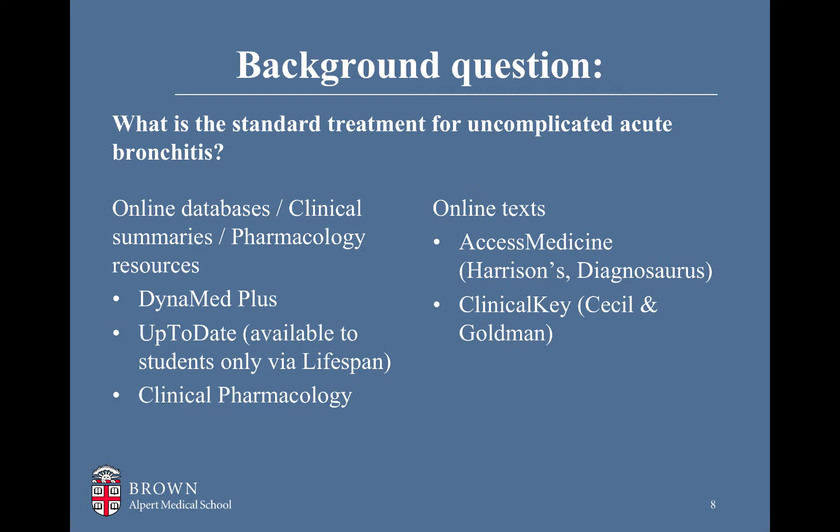You might also start with some online textbooks such as Harrison's, Cecil and Goldman, or Diagnosaurus if you want information about how to diagnose something. Access Medicine is a great resource for Harrison's, Diagnosaurus, and many other textbooks. Clinical Key is another collection of textbooks with the addition of some other resources — it has about a thousand textbooks, including Cecil's, Ferry's Clinical Advisor, the Netter Suite, and Robbins Pathology.